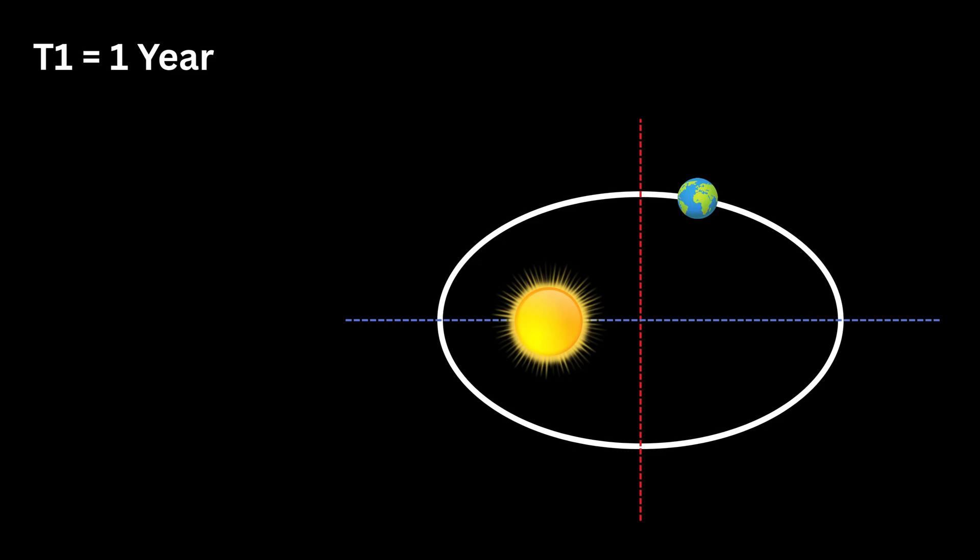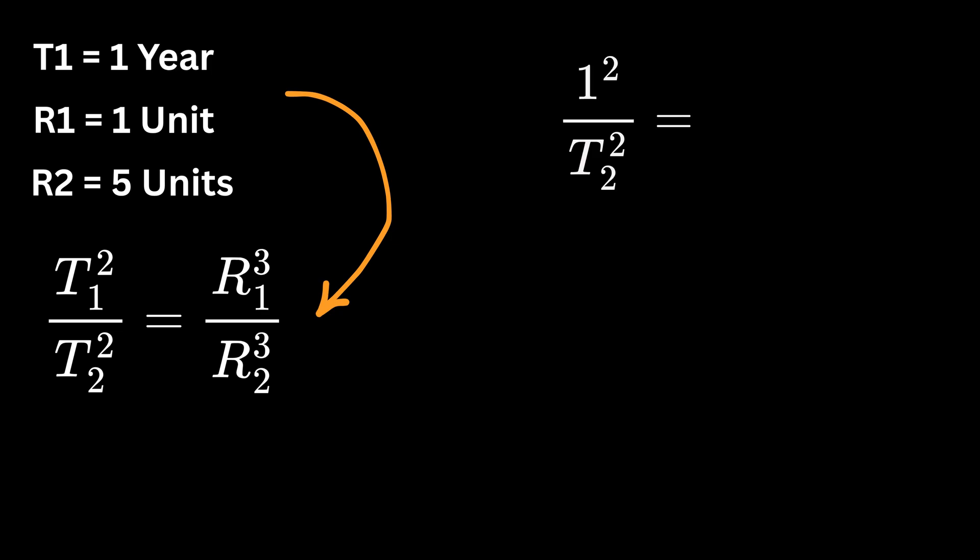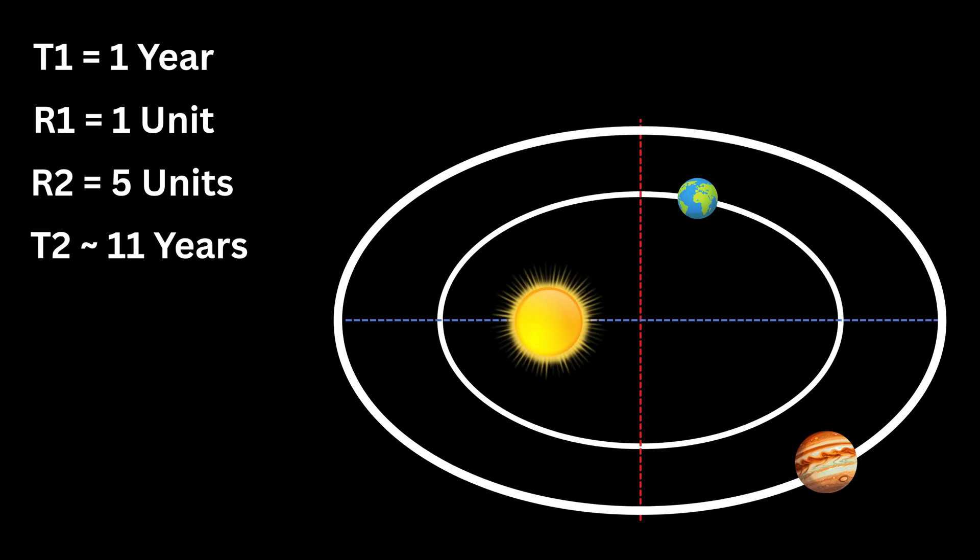For example, Earth has T₁ equal to one year and R₁ equal to one unit distance from the sun. Now Jupiter is about five units away from the sun, so its R₂ is five. Thus, T₁²/T₂² = R₁³/R₂³. Substituting the values: 1²/T₂² = 1³/5³, which gives T₂ approximately 11 years. Because of this relationship, planets that are only moderately farther out from the sun take much longer to complete a single revolution.